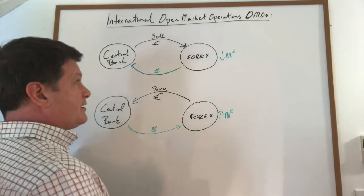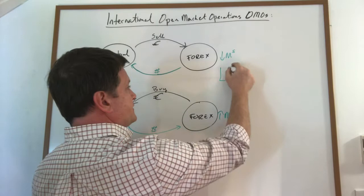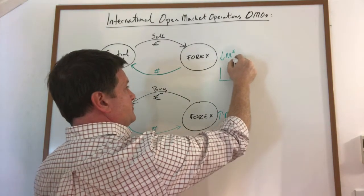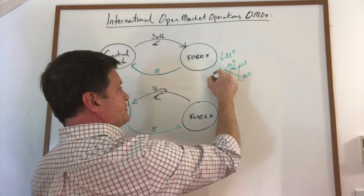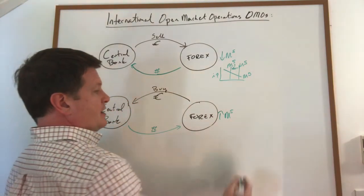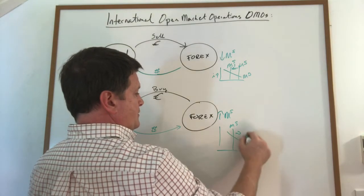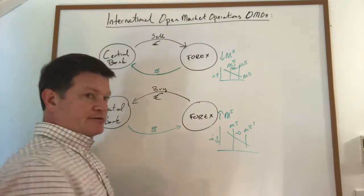It will decrease the money supply in a money market graph, if you're using that. So this means it did decrease the money supply in a money market graph, which would increase the domestic interest rate. And this would increase the money supply in a money market graph and decrease the domestic interest rate.